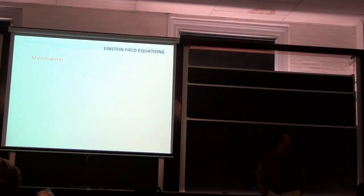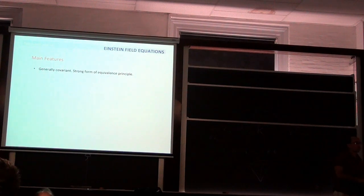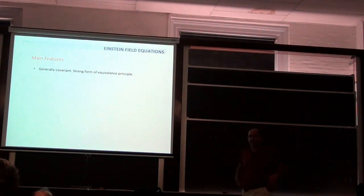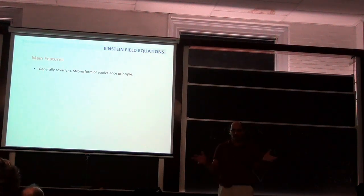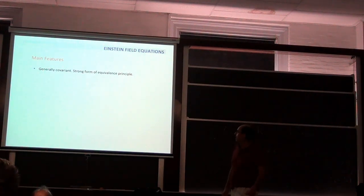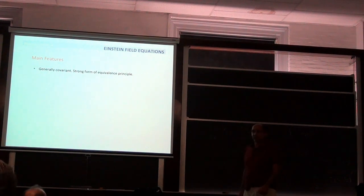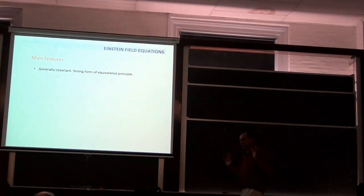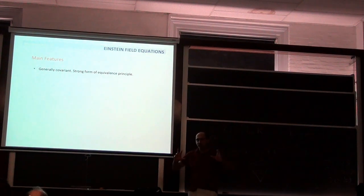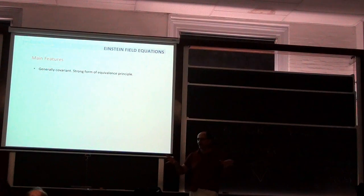Now let's talk about the main features of the Einstein equations. First, they are generally covariant. General covariance means there is no preferred coordinate system — all coordinates are equivalent. The strong form of the equivalence principle simply means that matter fields interact with gravity only through the metric, nothing else.